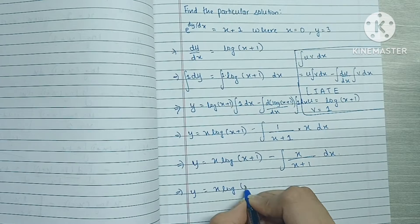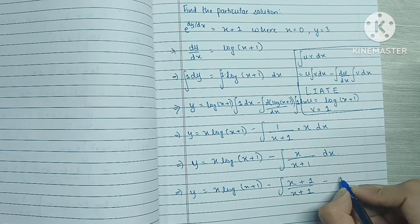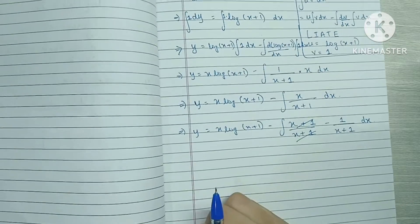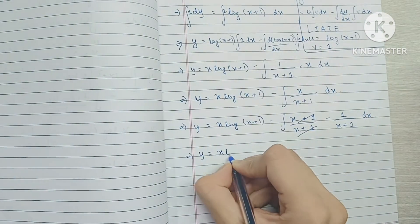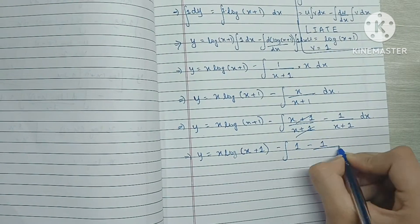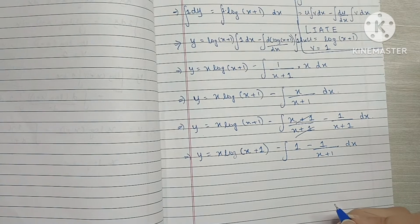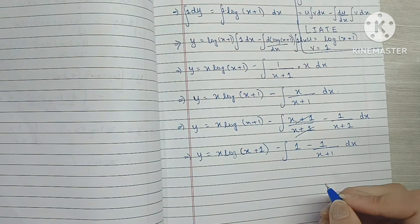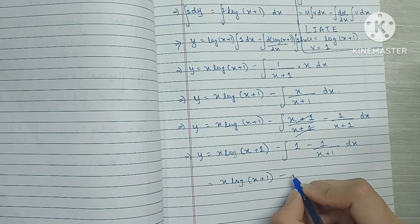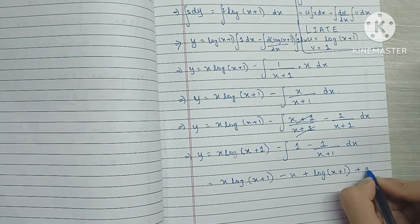Now for the integral of x/(x + 1), we add and subtract 1. So this becomes (x + 1)/(x + 1) minus 1/(x + 1), which simplifies to 1 minus 1/(x + 1). So y is equal to x·log(x + 1) minus the integration of 1 minus 1/(x + 1). The integration of 1/x or 1/(x + constant) is log of x plus that constant. So we get x·log(x + 1) minus x plus log(x + 1) plus an arbitrary constant c.